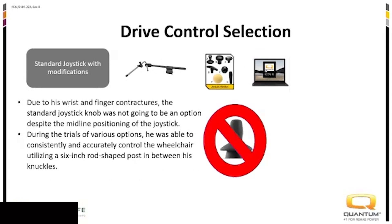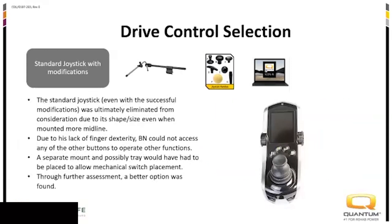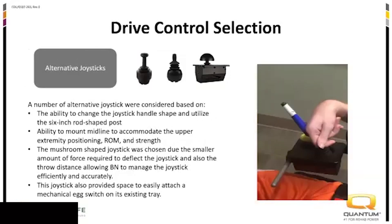The standard joystick has a lot of buttons, dials, and speed potentiometers — it's big and bulky — so it wasn't ideal to put midline, especially since he couldn't access any of those buttons or toggles anyway. We tried a couple of different alternative joystick types and eventually ended up utilizing a mushroom-type joystick. We could take the mushroom part off and put that six-inch thin rod on that joystick. It had less force requirement to activate, and it also had a kind of built-in tray — which was important for the next step.